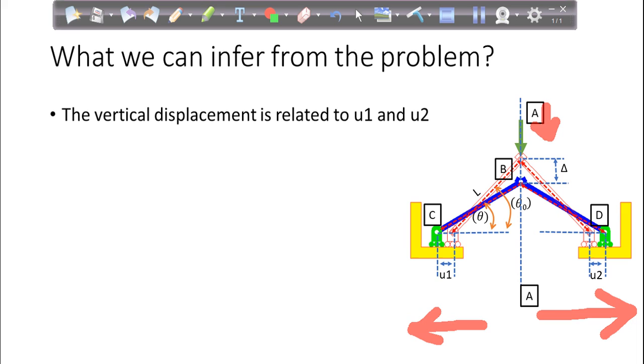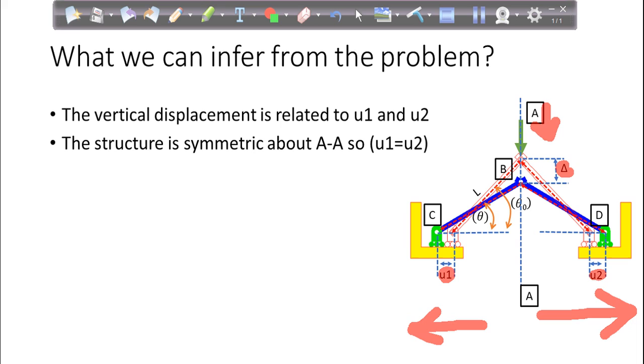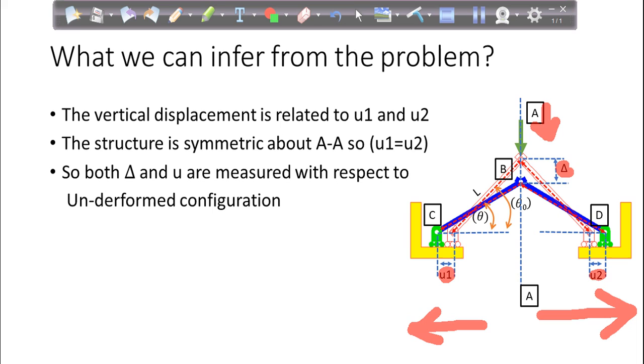So let me summarize all the points. The vertical displacement is related to U1 and U2. The vertical displacement here and U1 and U2 is horizontal displacement, but they are related. Then the second point is the structure is symmetric about AA because the length is the same here, the boundary conditions are the same, same load is applied. So the structure is symmetric about AA.